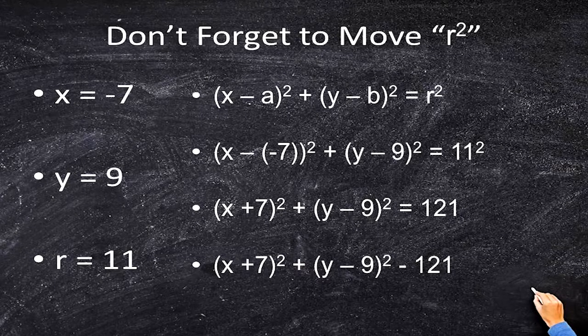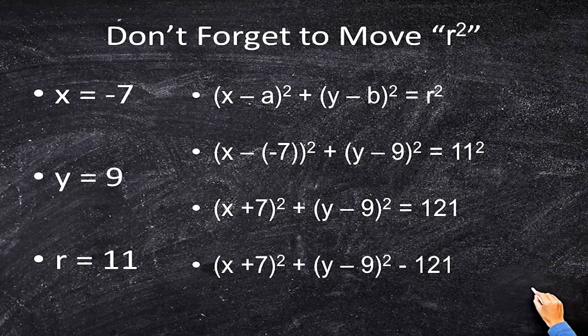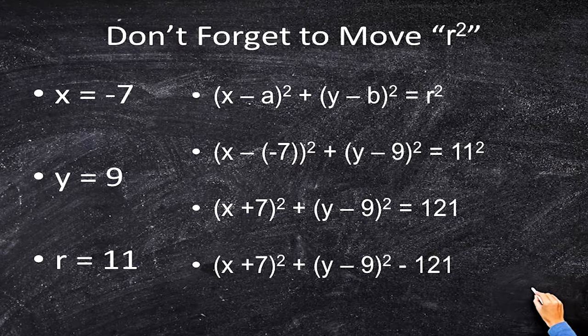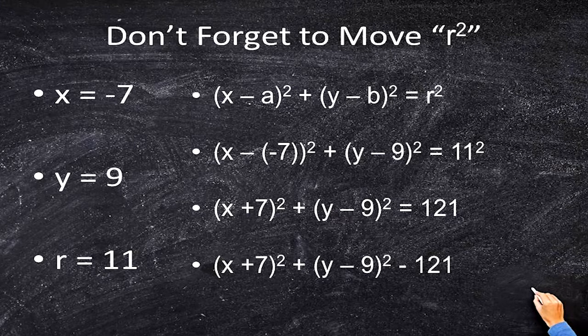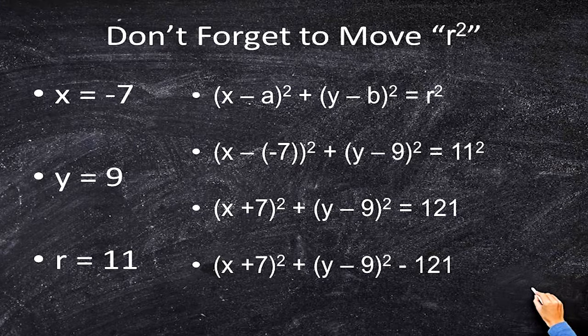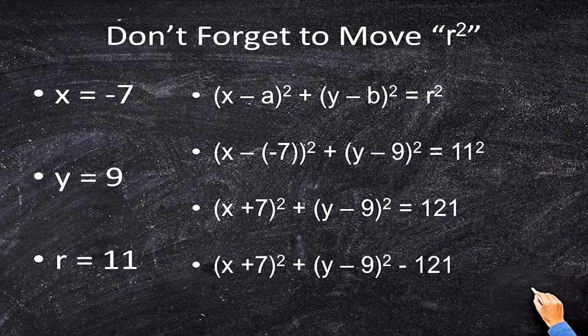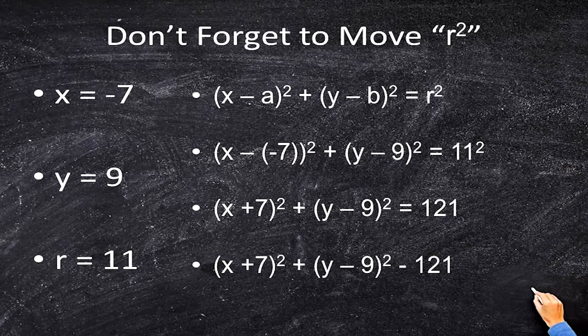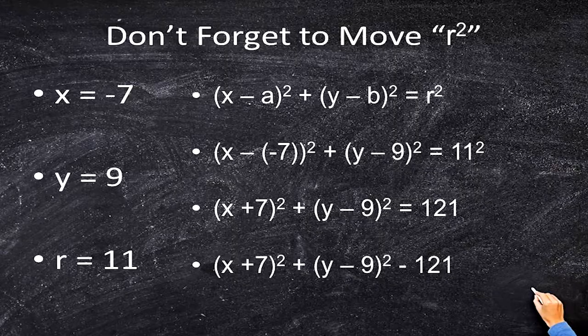We begin with our equation and we plug in negative 7 for a, which becomes plus 7. We plug in a 9 for b, so that's x plus 7, y minus 9. Then, and only then, do we go ahead and move over r squared. So 11 squared is 121. And if we move over 121 to the left side of the equation, it becomes negative 121.